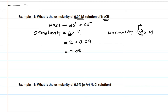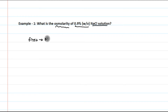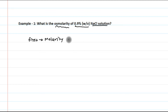Let us take one more difficult example. What is the osmolarity of a 0.9% weight by volume sodium chloride solution? Our strategy is the same as for normality: first find the molarity, then convert this molarity into osmolarity.